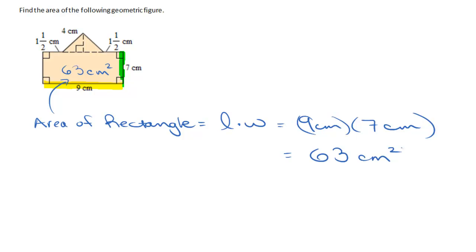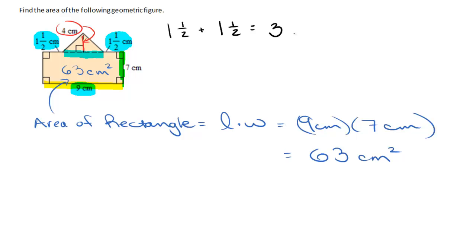Now we need to find the area of the triangle. I need to find the base — the height looks like it's 4 centimeters. To find the base, I'm going to subtract from the 9: one and a half plus one and a half is three centimeters, and nine take away three gives me six centimeters as the base of the triangle.